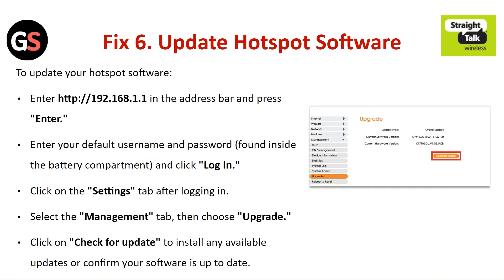Fix 6: Update the hotspot software. To update the hotspot software, enter the address in the address bar and press Enter. Enter your default username and password and click Login. Click on the Settings tab after login, select the Management tab, then choose Upgrade. Click on Check for Update to install any available update or confirm your software is up to date.